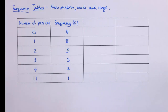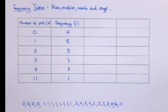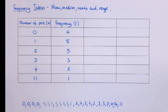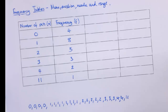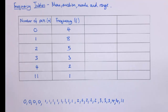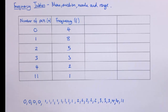A frequency table is just really a way of summarising a list. I've written out that list here: there are 4 zeros, 8 ones, 5 twos, 3 threes, 2 fours, and 1 eleven. This frequency table is just describing this list of data. One thing we'd like to do is get some statistics from this — you know how to work out the mean, median, mode and range if data was presented as a list, so we're just going to think how we can do that quickly from a frequency table.